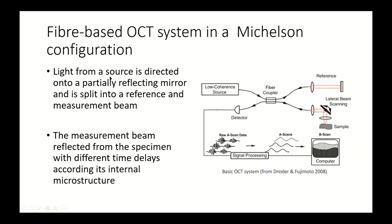To recap: the source of light comes from the low coherence source. The light is split into two beams — one goes to the reference mirror, and another goes into the retinal sample. When the reflected lights come back into the coupler, they are passed to the detector for further analysis.